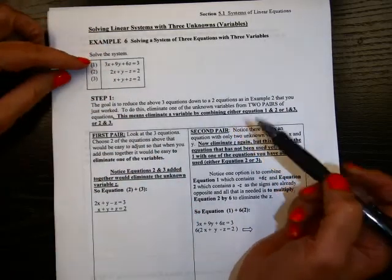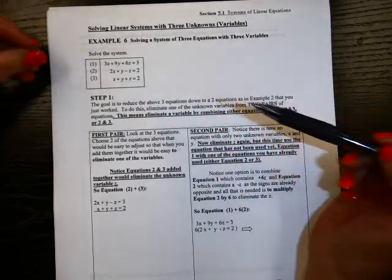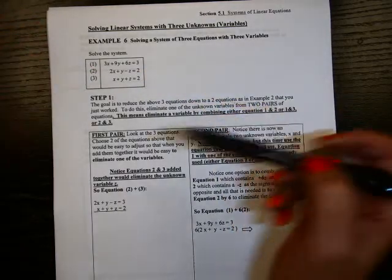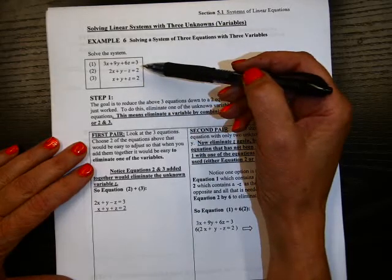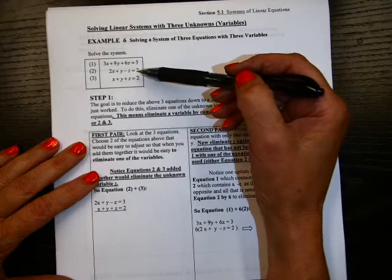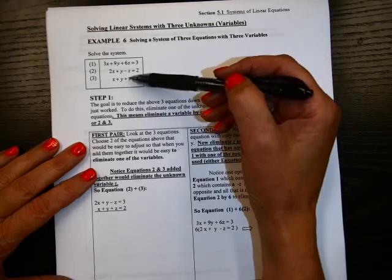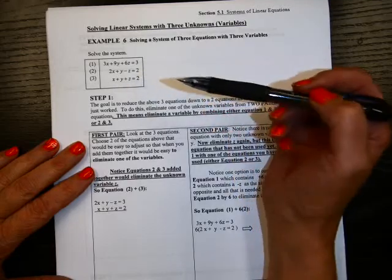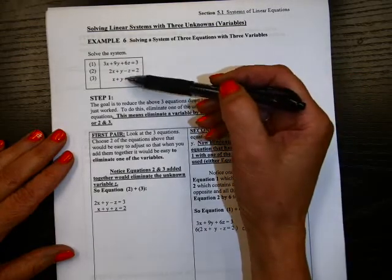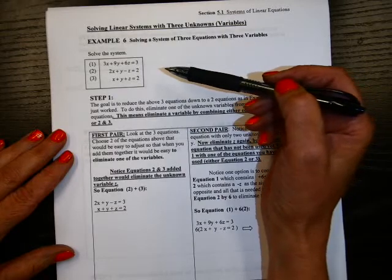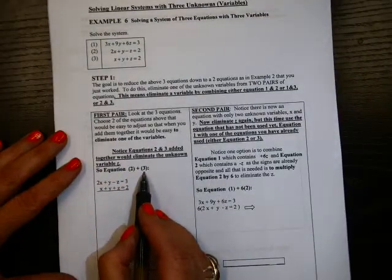So you want to combine either equation one and two, one and three, or two and three to start eliminating one variable. So when I started looking at it, my first pair, I looked at all three equations, and I want to choose two of these to eliminate one variable. If you notice, equation two and three eliminates the z when you add them together. Notice the negative z and the z. So I thought that would be the easiest one. You can just determine that every time you're going to eliminate the x first. But I like to look and see which would be the shortest and easiest thing to eliminate. So I've noticed right off the bat, I could add these together and get rid of the z.